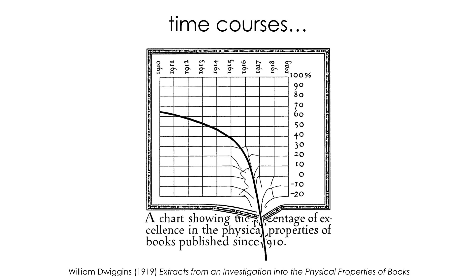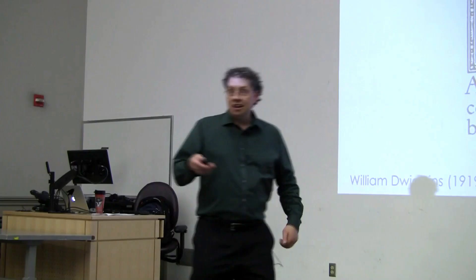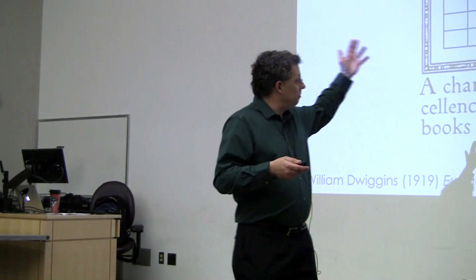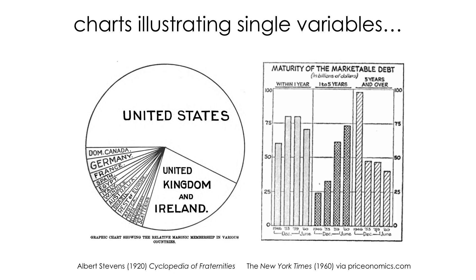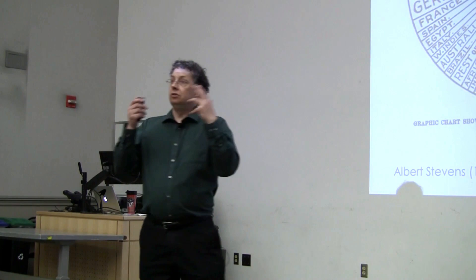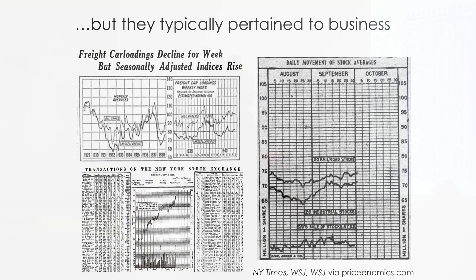We also see time courses — representations of how one variable changes in time. This one's kind of a parody from a 1919 book where the time course, showing the quality of books being produced, is actually broken out of its frame and crashed out. We also see charts that illustrate a single variable at a time. This pie chart shows what fraction of the members of the Masons are in which country. Over here, we've got maturity of the marketable debt — again, a single value with bars showing time.